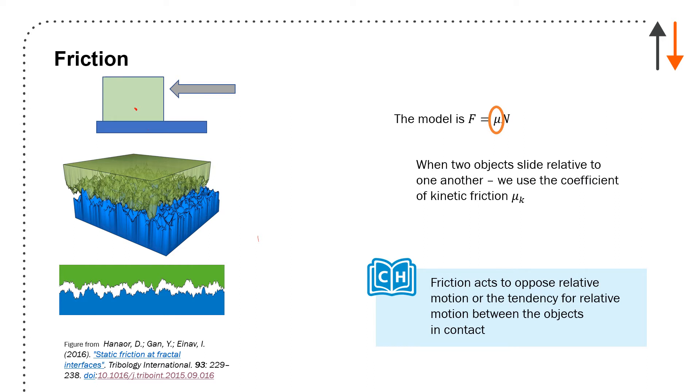When two objects slide relative to one another, the coefficient changes from mu to mu sub k. When objects don't slide relative to one another, it's the coefficient of static friction. We'll have three cases. Ultimately, what's important to understand is that friction acts to oppose relative motion or the tendency of relative motion between objects in contact.